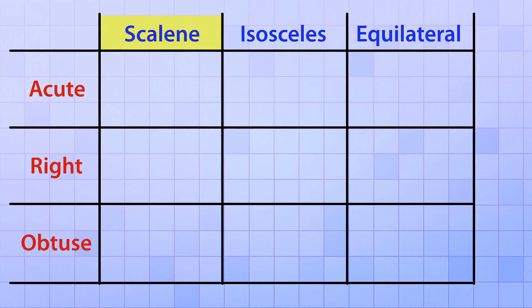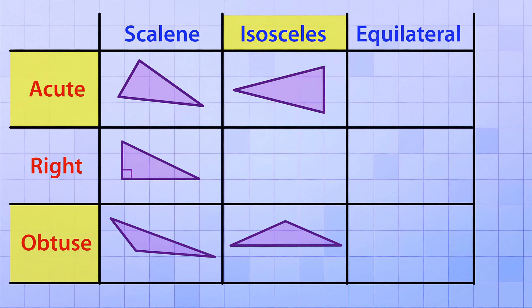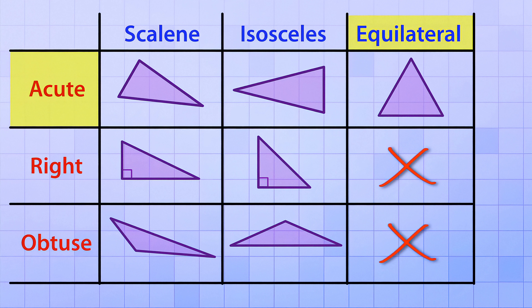A scalene triangle can also be a right triangle, and a scalene triangle can also be either obtuse or acute. In the same way, an isosceles triangle can also be acute or obtuse, and in one special case, an isosceles triangle can also be a right triangle. But things are different when it comes to an equilateral triangle — an equilateral triangle is always an acute triangle. Because all three sides are exactly the same, all three angles must also be exactly the same, and since you can't have more than one right or obtuse angle in a triangle, all the angles in an equilateral triangle must be acute.